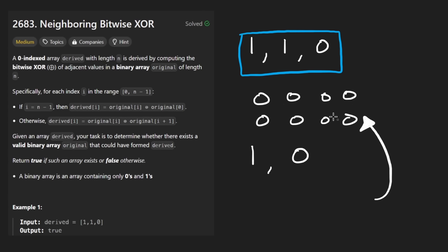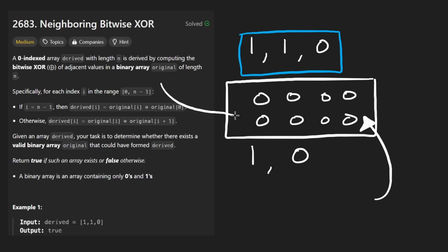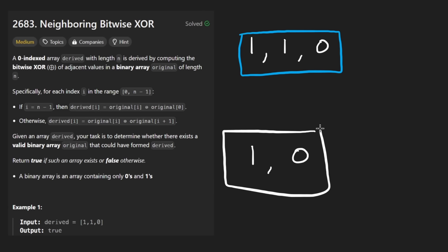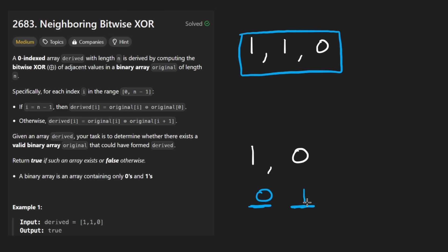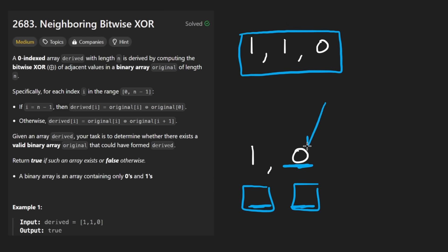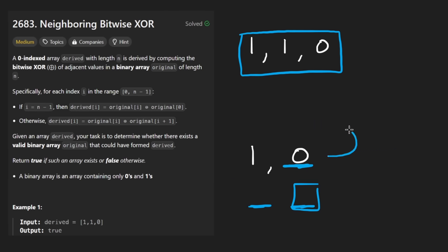I'm just making some observations — I think this is an important step. If you have no idea how to solve the problem, just start to think of some examples and look for patterns. They give us this example which is a very good case where it's actually not possible to create the original array. The one tells us those two numbers must have been different. The zero tells us that the last number and the number after it — looping around — must be the same. That's a contradiction, so we return false. This can happen precisely because we are looping around.